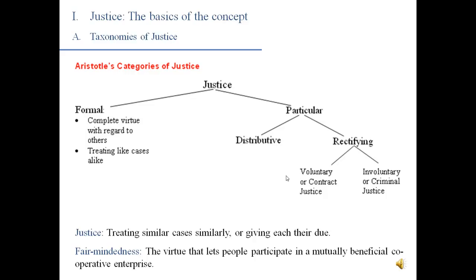Aristotle distinguished justice in the formal and particular sense. The formal idea of justice is the attitude we were just talking about — treating similar cases similarly. He calls this the formal idea of justice because it doesn't provide any content to the notion of justice; it's just a format that you can plug ideas of justice into. He also called this complete virtue with regard to others — justice was the virtue you had in treating others: treating others right, properly, fairly.